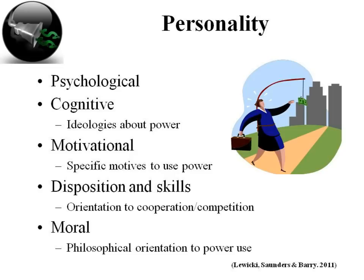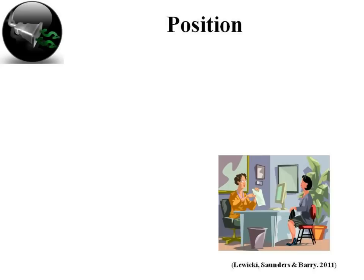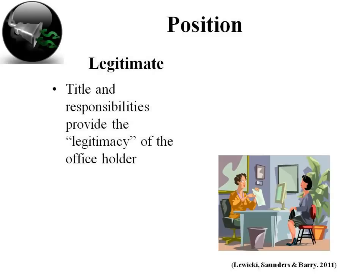The moral orientation is the philosophical orientation to power and its uses, which we'll discuss further in the next chapter on ethics. In the position category of power, there are two major sources in an organization. Legitimate power is grounded in the title, duties, and responsibilities of a job description, and the level within an organizational hierarchy. Most of you are in leadership positions, so you understand this. It's derived from occupying a particular job, office, or position — the power resides in the title, responsibilities, and the legitimacy of the officeholder.